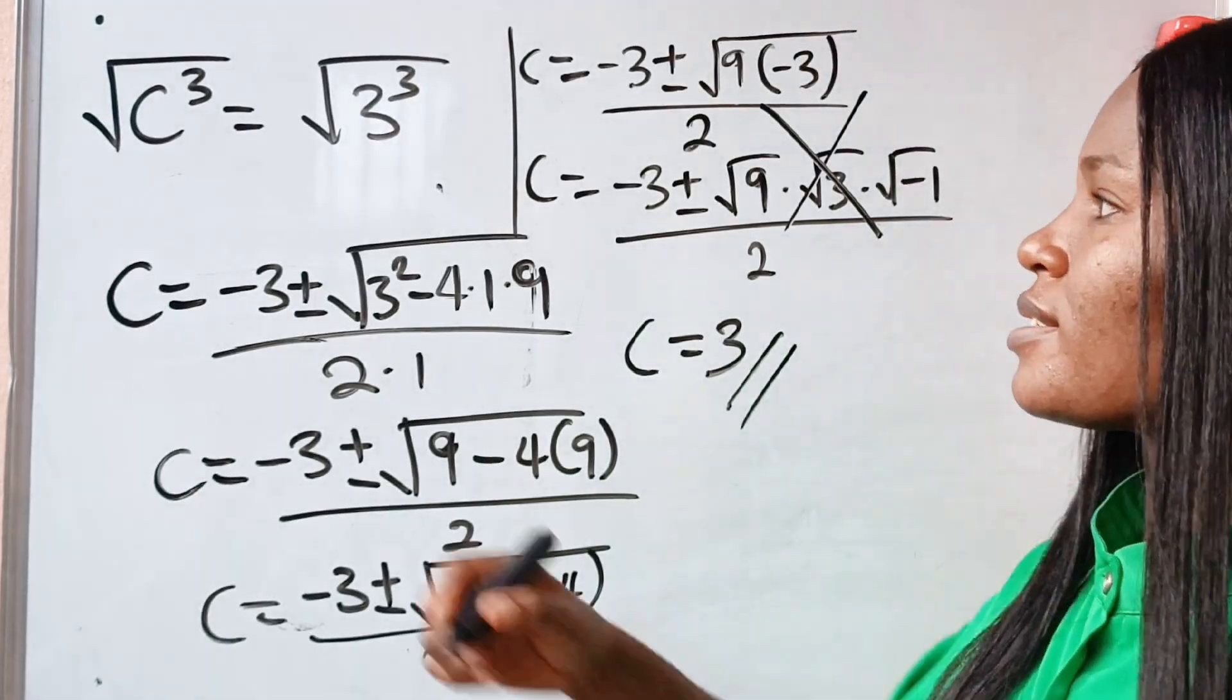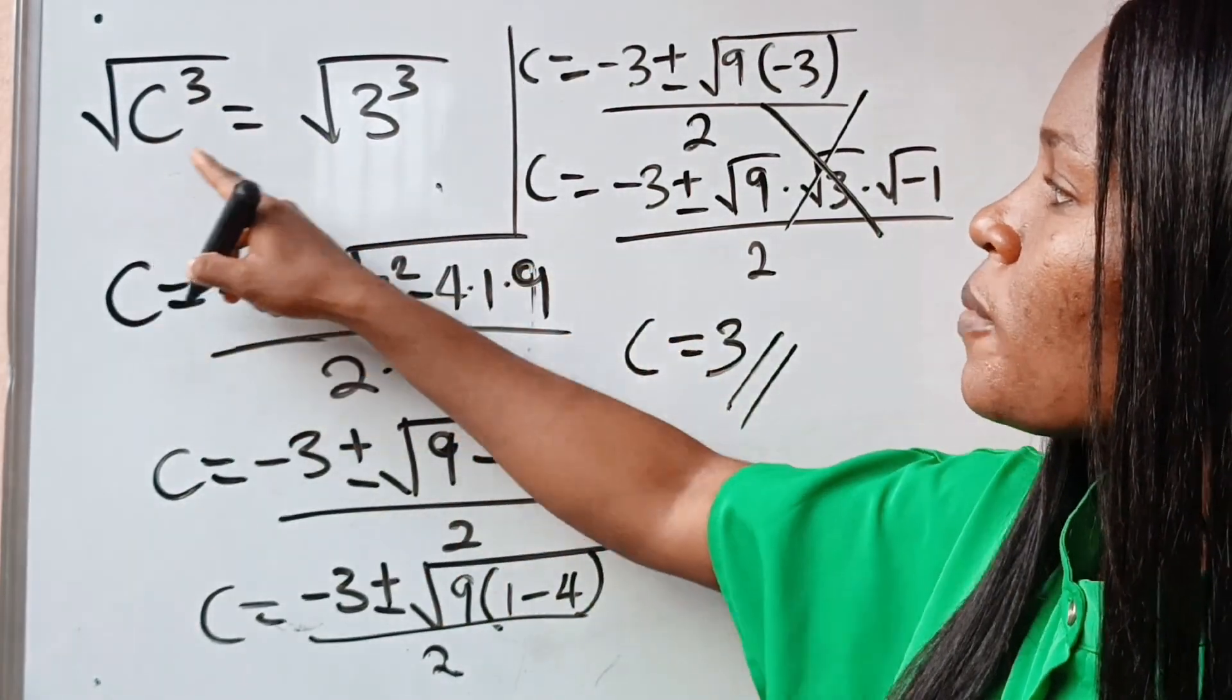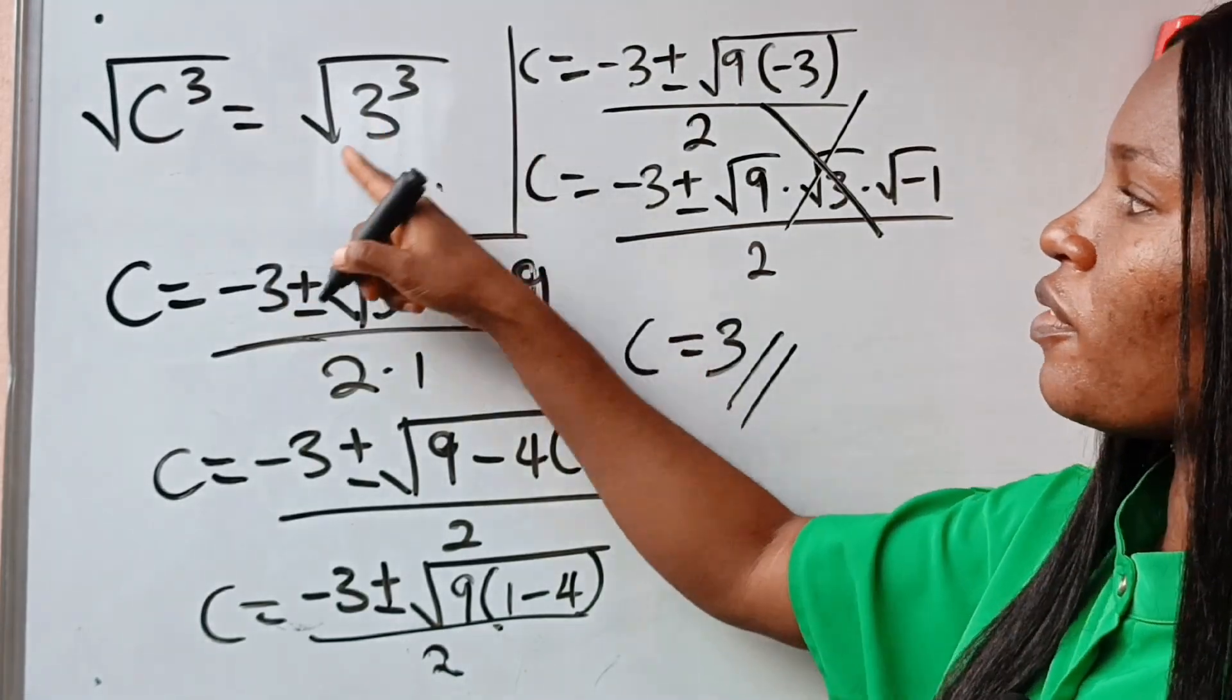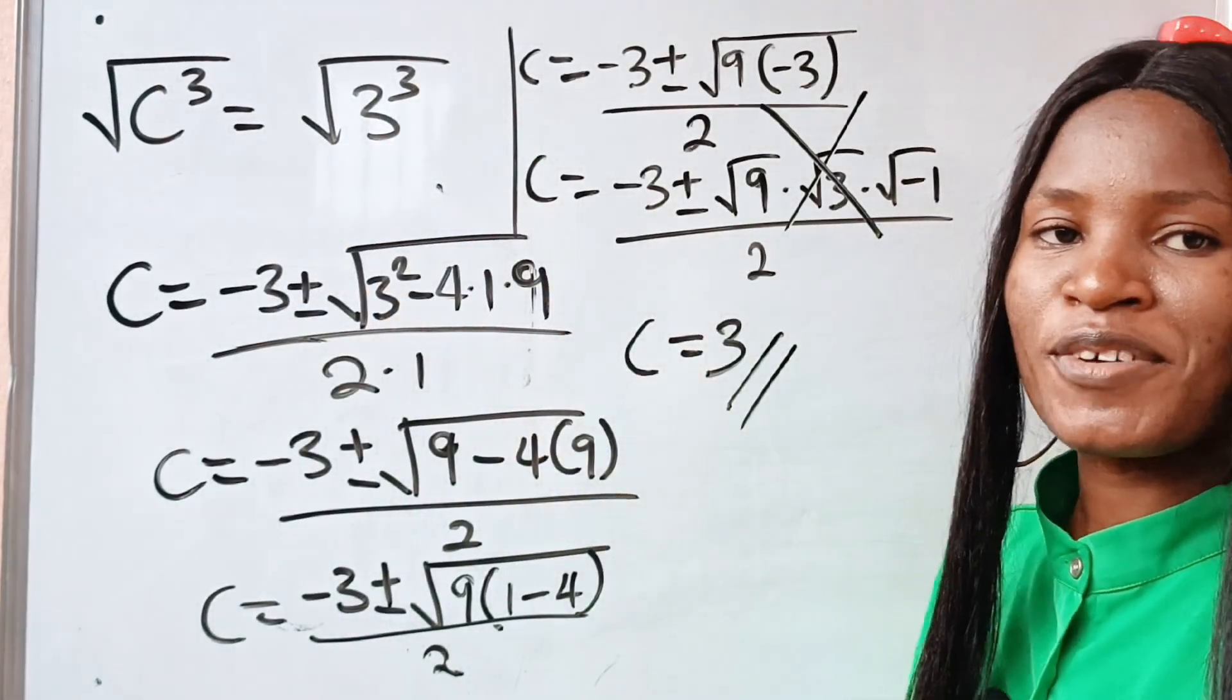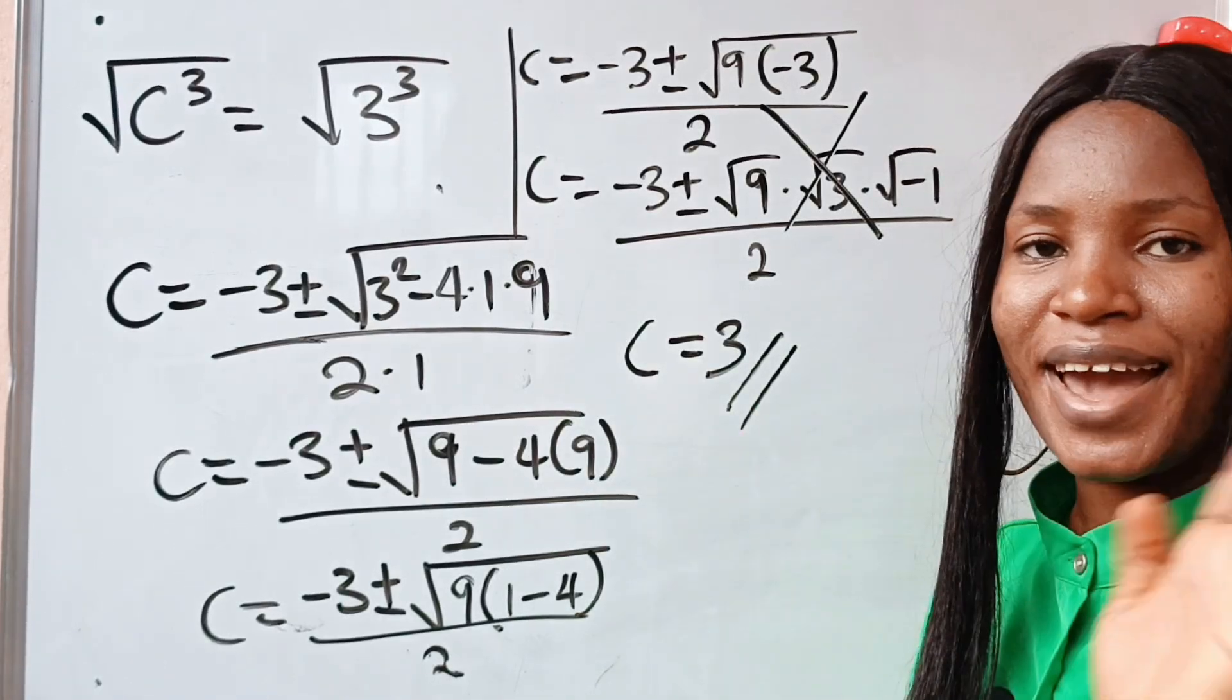And if we should prove that, you can see that 3 to the power of 3 square root is also equal to 3 to the power of 3 square root. Thank you so much for watching. See you in my next video. Bye.